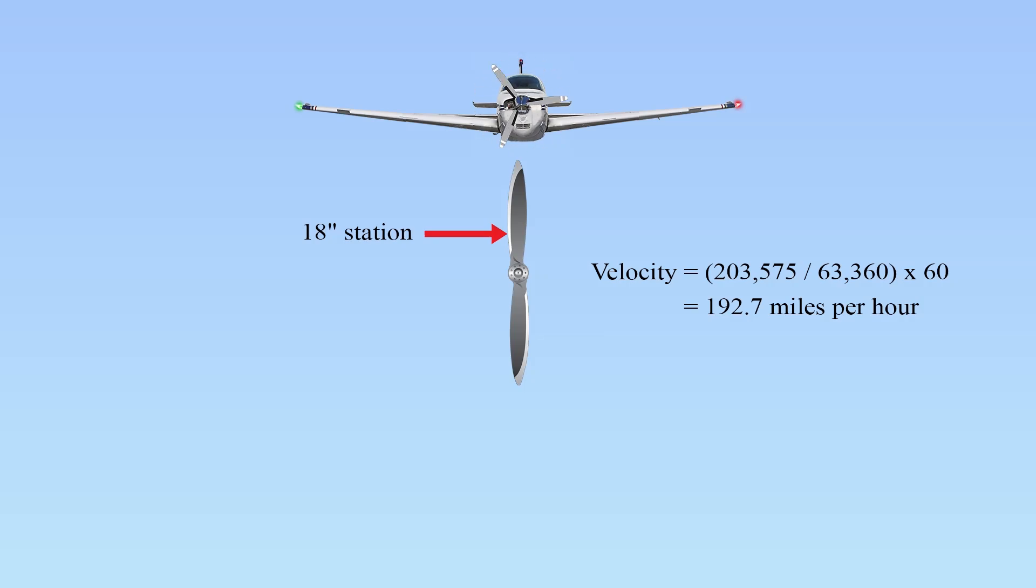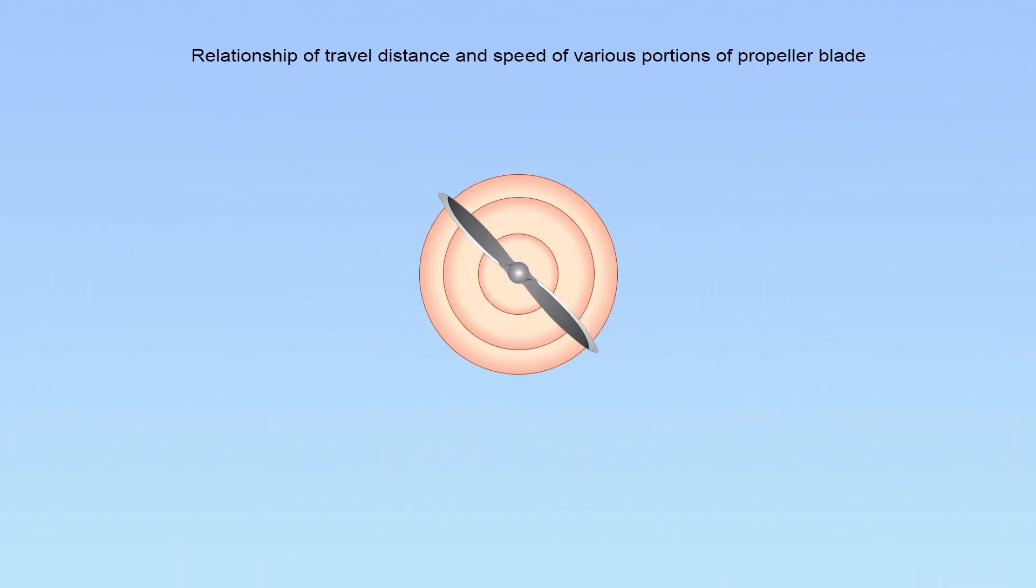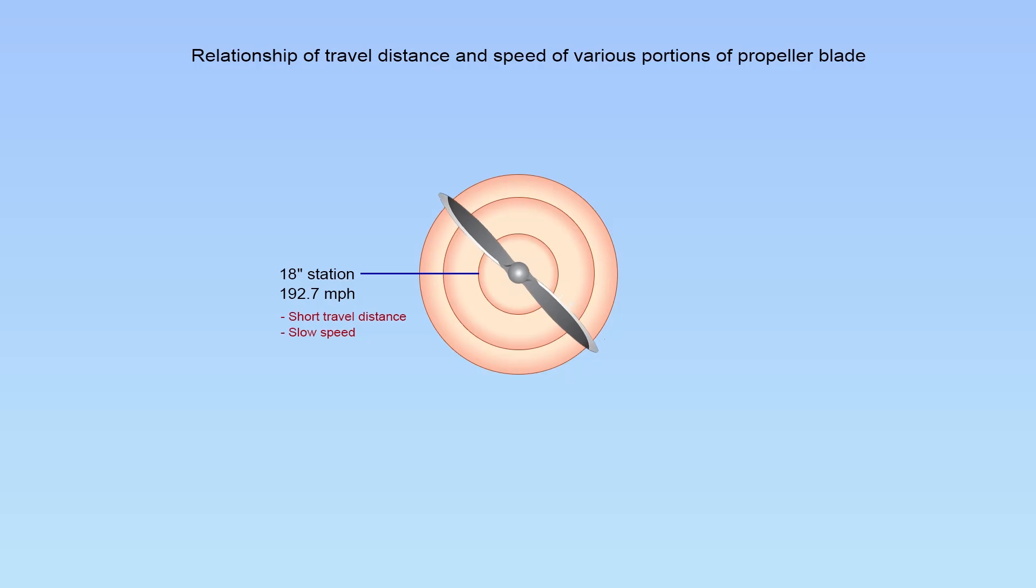To convert this to miles per hour, divide 203,575 by 63,360 and multiply the product by 60, the number of minutes in one hour. The speed of the propeller at station 18 is 192.7 miles per hour.